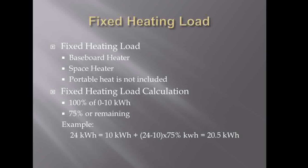Now let's move on to the fixed heating load. When we talk about fixed heating load, we mean baseboard heaters or space heaters — not portable heaters. A 1.5 kW portable heater in your bedroom doesn't count. For the fixed heating load calculation, we calculate 100% of the first 10 kilowatts, and 75% of the remaining. For example, if you have a 24 kW baseboard heating system, you take 100% of the first 10 kW plus (24 − 10) × 75% = 20.5 kW total.